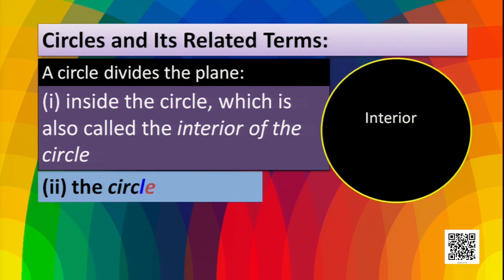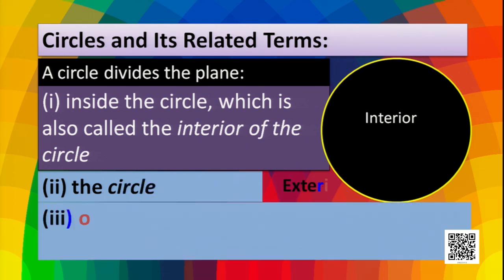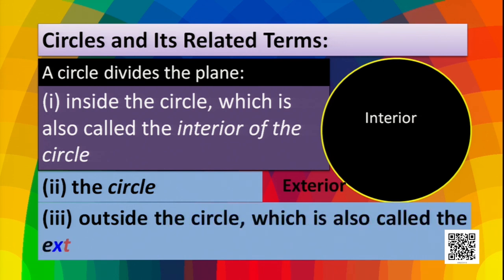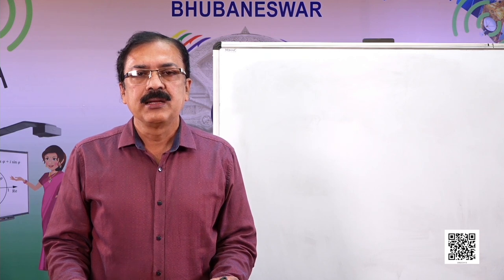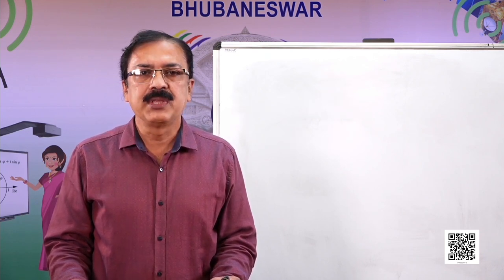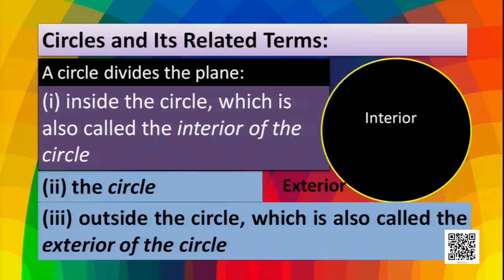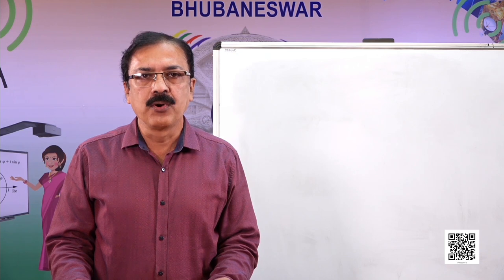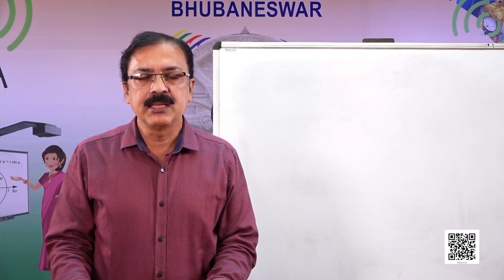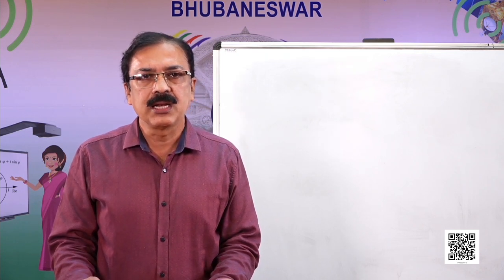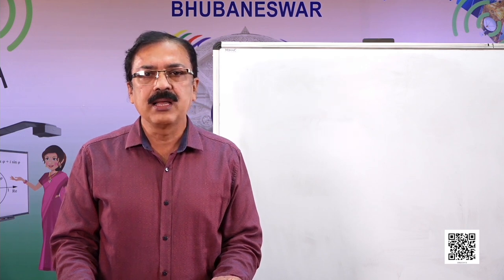The second part is the circle itself. The third part is outside the circle, which is called the exterior of the circle. So a circle divides the plane into three parts. If we consider them as sets of points, we have three disjoint sets: the interior, the circle itself, and the exterior. No point in the interior is a point on the circle, and similarly no point in the exterior is a point on the circle.